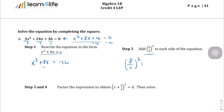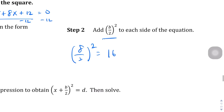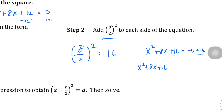8 divided by 2 is 4, and 4 squared is 16. So we're going to add 16 to both sides. We get x squared plus 8x plus 16 on the left, and negative 12 plus 16 on the right. What does that equal? 4. So we have x squared plus 8x plus 16 equals 4.